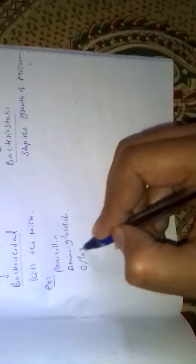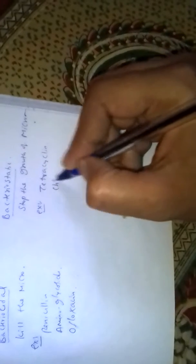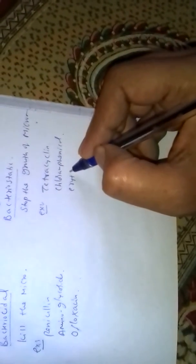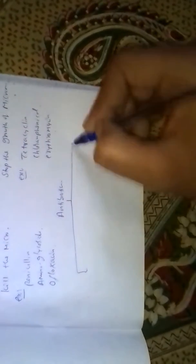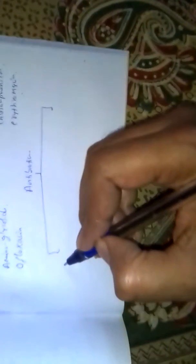Examples of bacteriostatic antibiotics include tetracycline, chloramphenicol, and erythromycin. Antibiotics are also classified into two further types: broad-spectrum antibiotics and narrow-spectrum antibiotics.